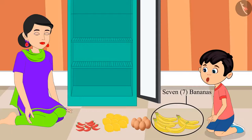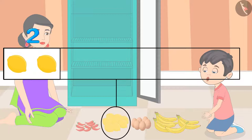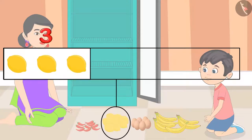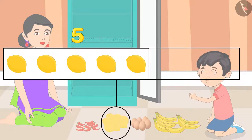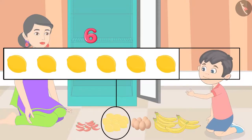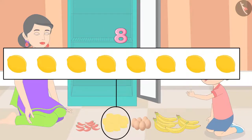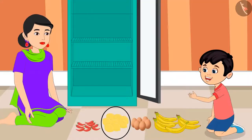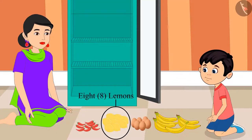1, 2, 3, 4, 5, 6 and 7. These are 7 bananas. 1, 2, 3, 4, 5, 6, 7 and 8. These are 8 lemons.